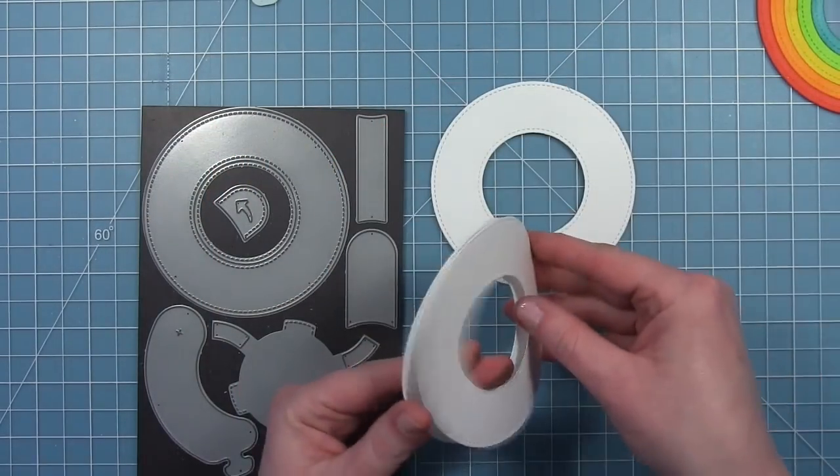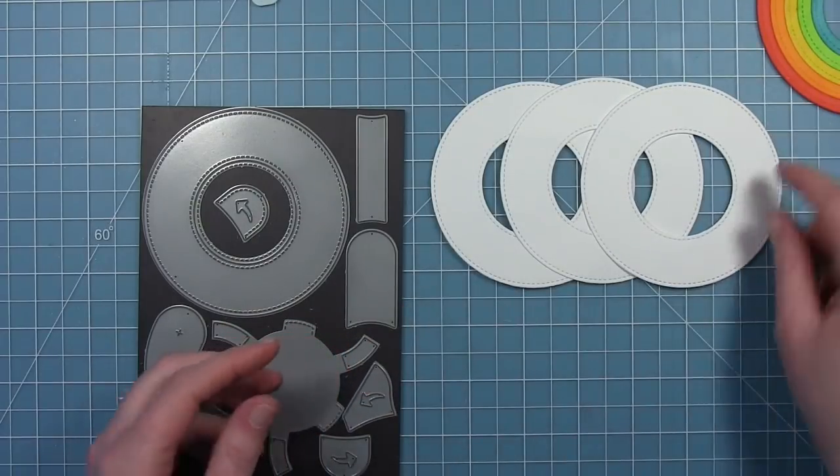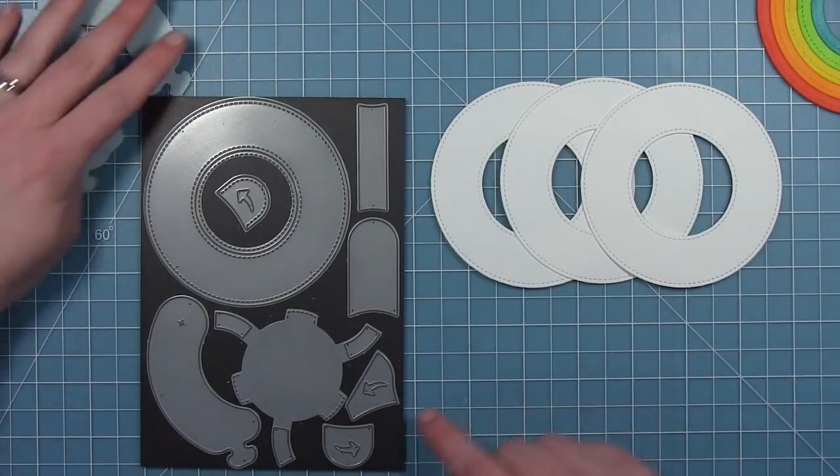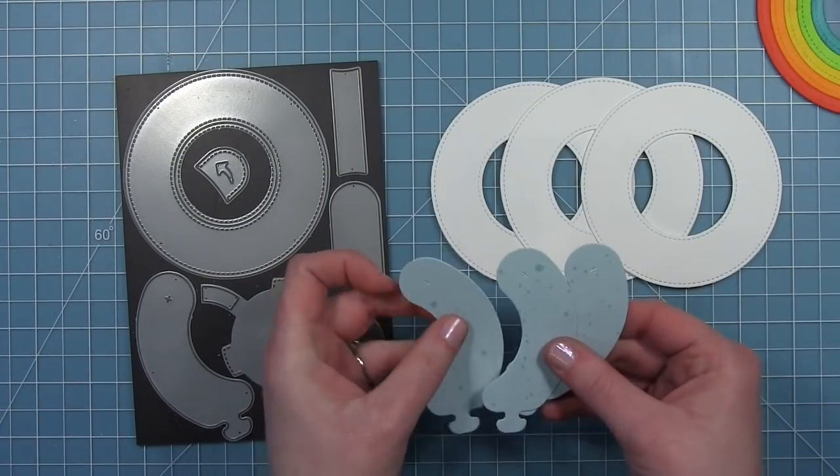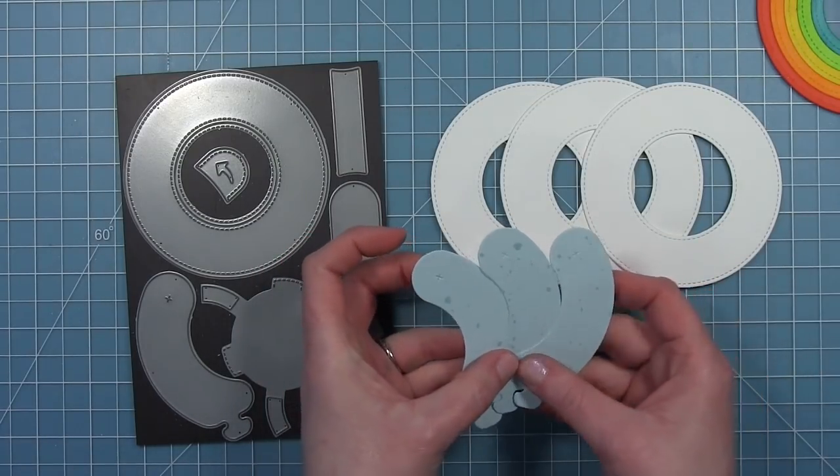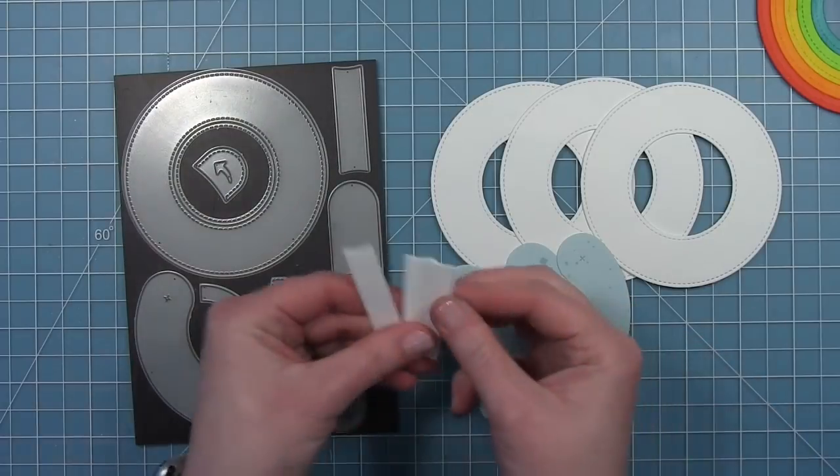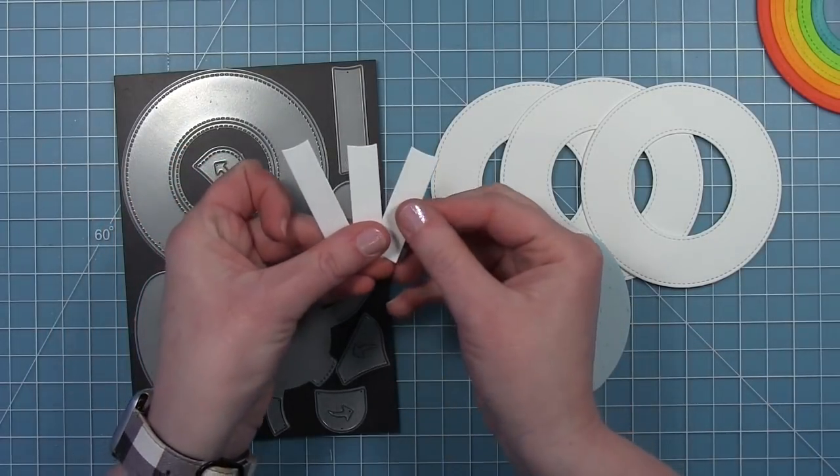Now I can work on putting together my magic iris. So you can see I've got three of the rings cut. I've got three of those sausage pieces cut and they're cut from that teal colored spiffy speckles paper. And then I've got three of the stabilizers cut.